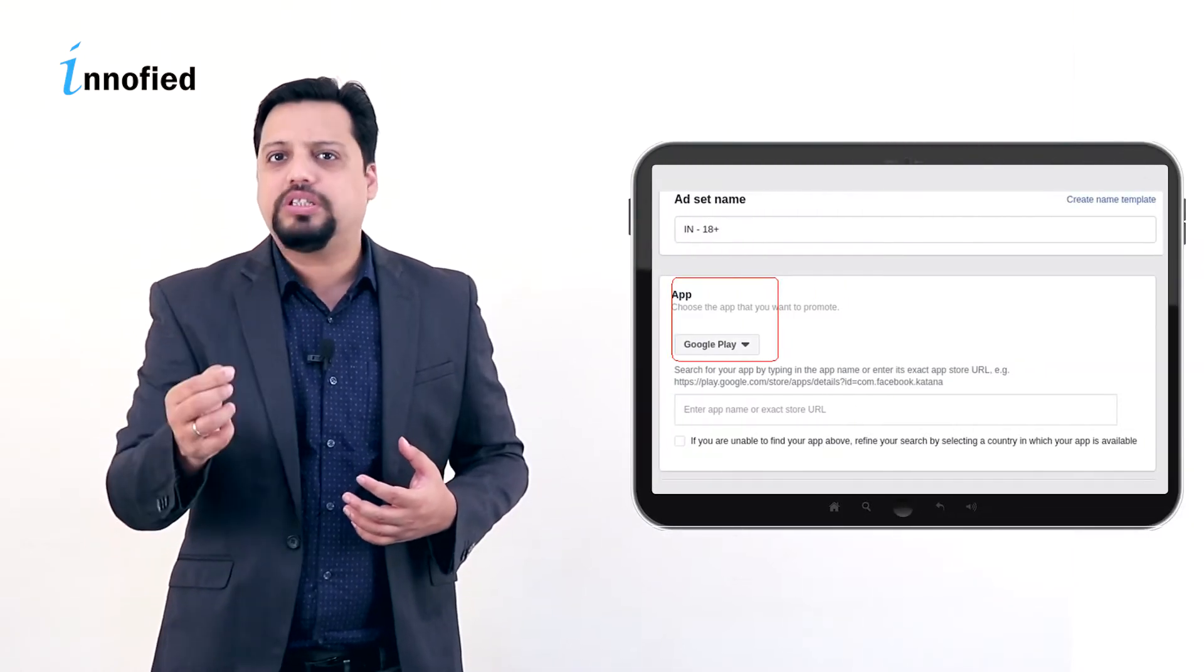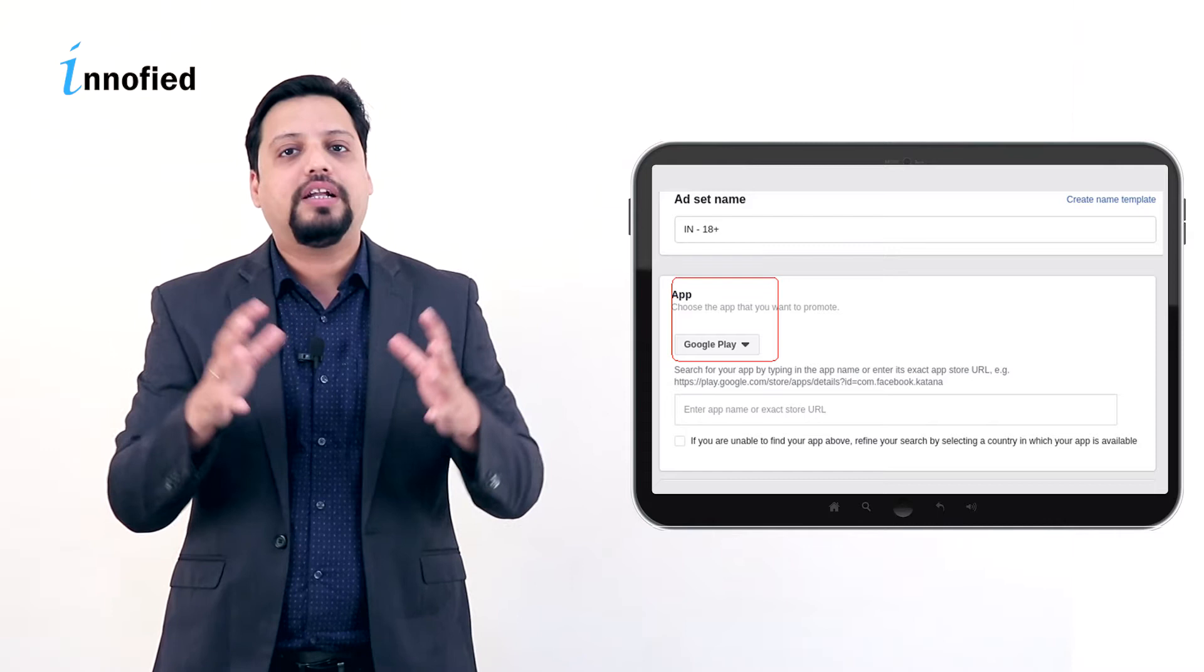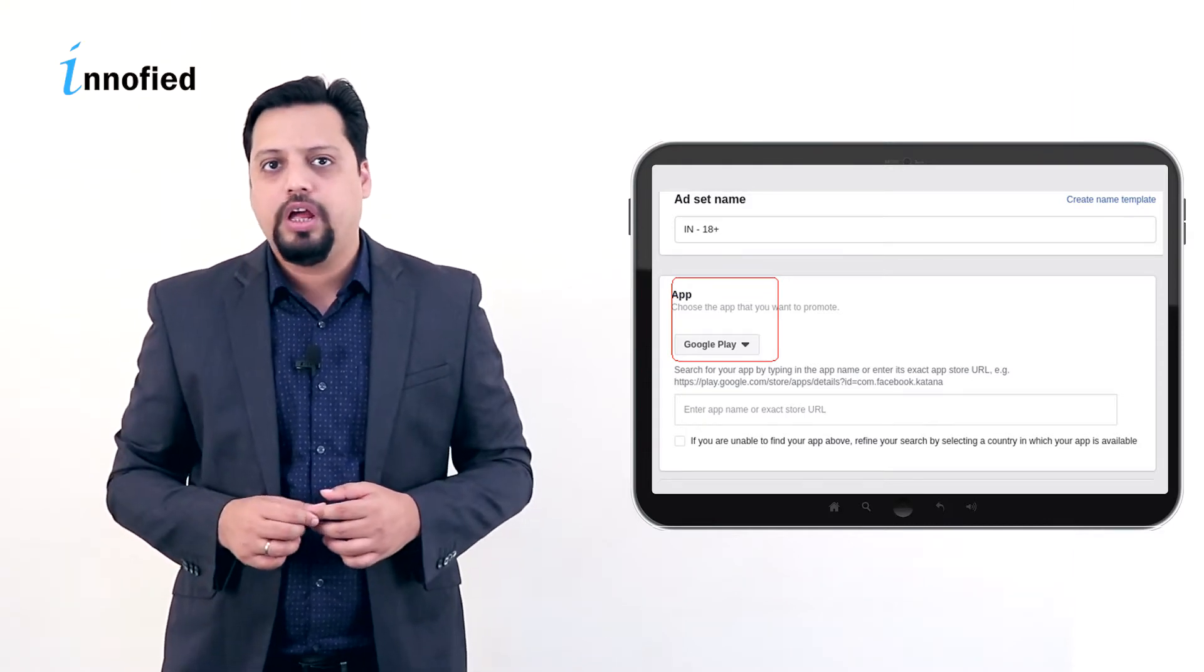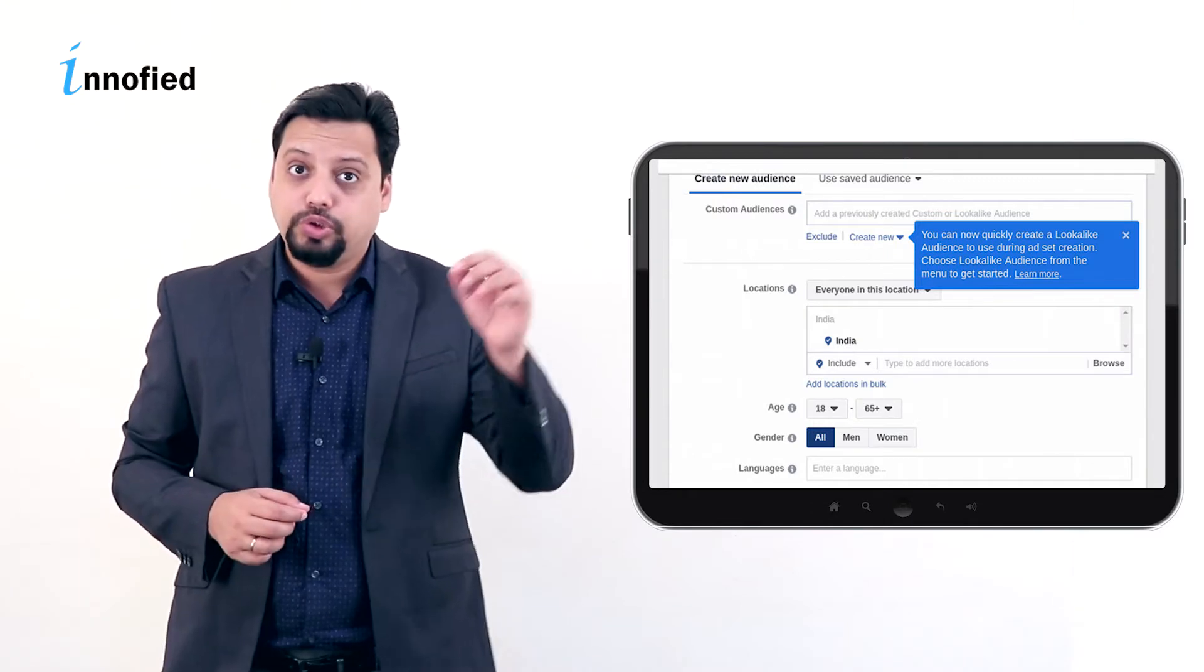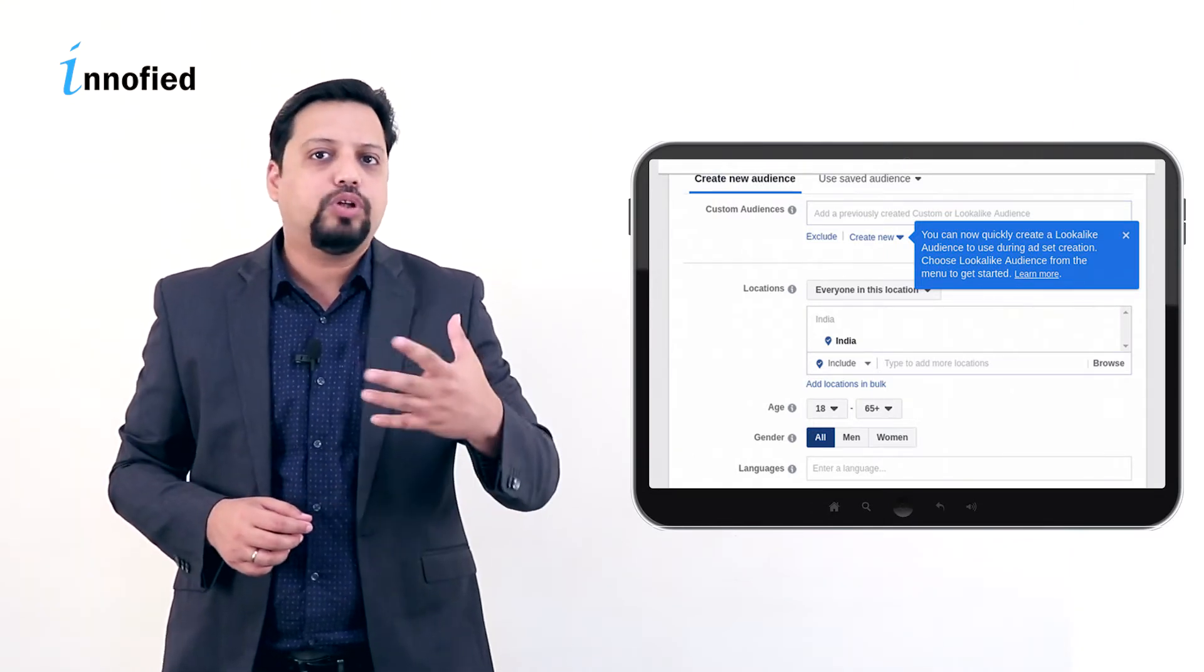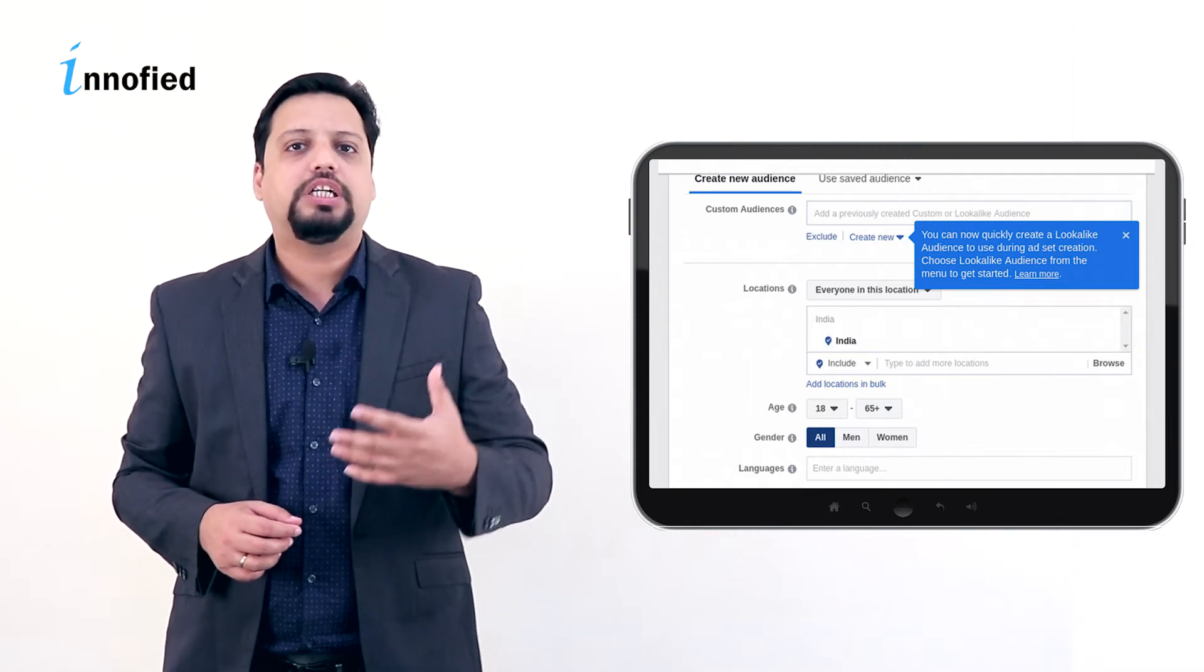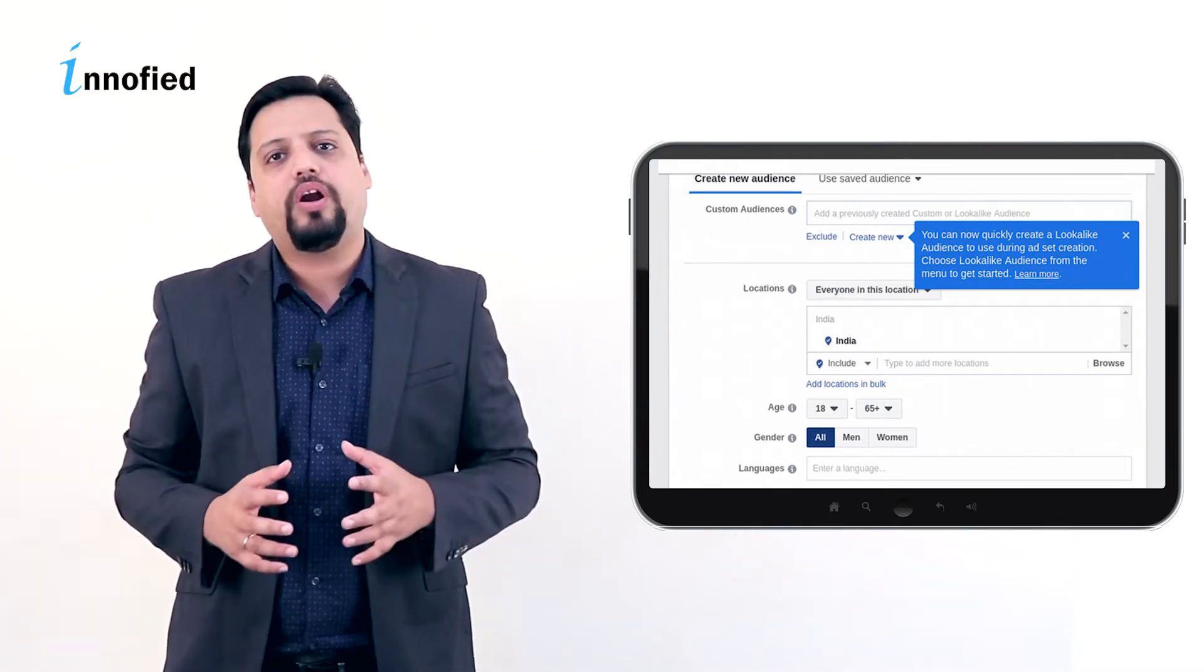Now, you need to select stores like Google Play stores, iTunes where you want to promote your app. And you will get a drop down option here. Now, you need to select your audience group. You can also choose your custom audience or look-alike audience group here. I will come to this part after some time and will discuss more about these two types of audience.